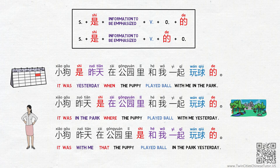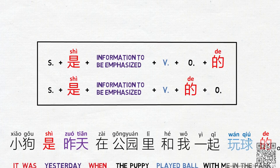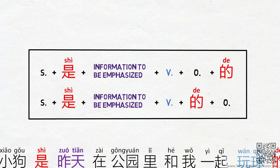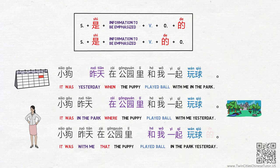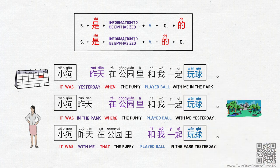How is this usage of 是的 different from what we talked about earlier? The difference is: when 是的 is added to an existing complete sentence, it is used only for emphasis. In other words, if you take 是的 away, the sentence should still make sense grammatically. If we take 是的 away, you can still find the subject, the verb, and the object of the sentences. The word 是 in these sentences is not used as the main verb.